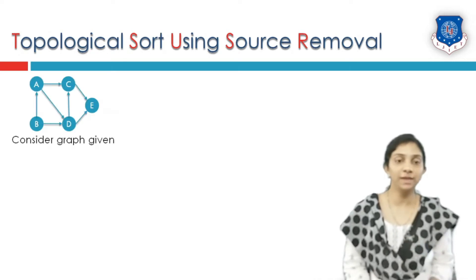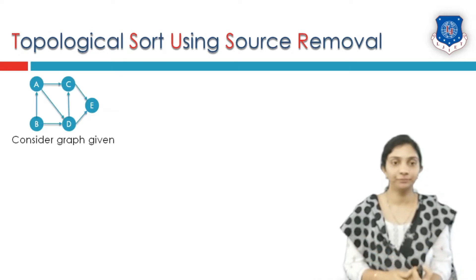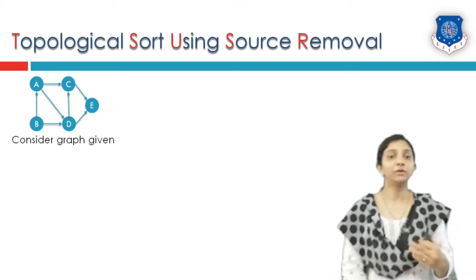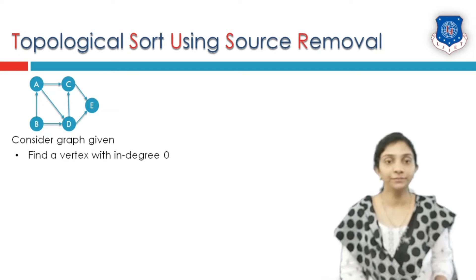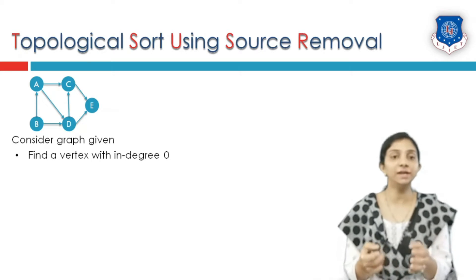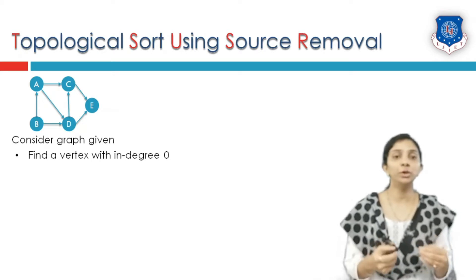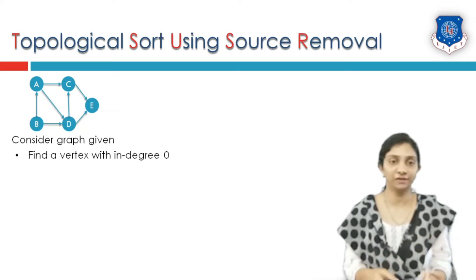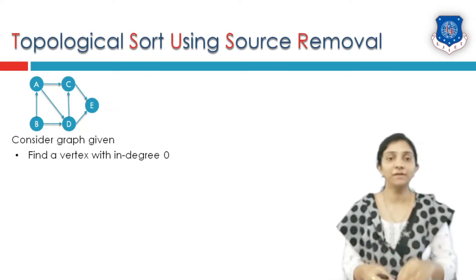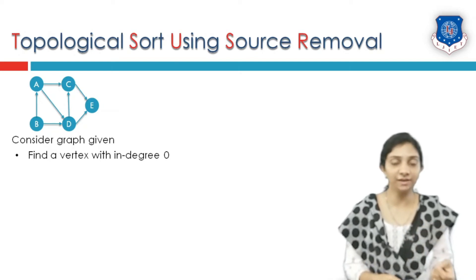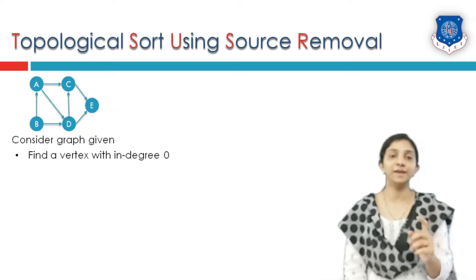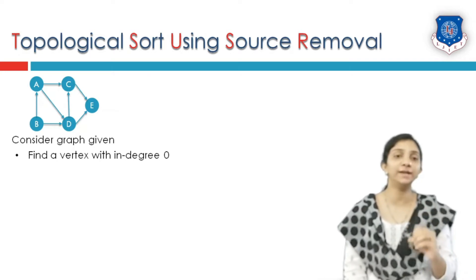To understand the working, we have to work with an example. Consider a given graph. In this graph, we have to generate a topological order. Find out the vertex which is having in-degree 0. What do we mean by in-degree of a vertex? If there are any incoming edges to a vertex, it is called the in-degree. If there are no incoming edges to any vertex, that vertex is said to have in-degree 0.